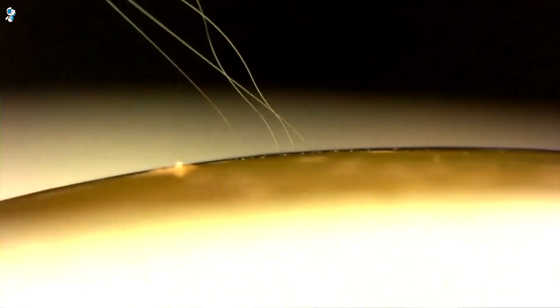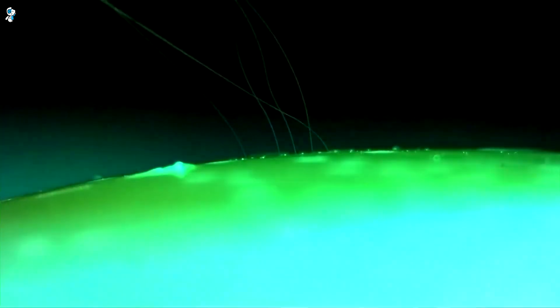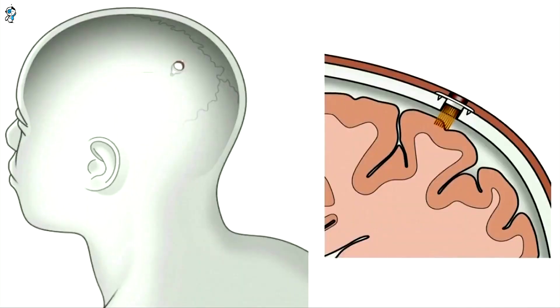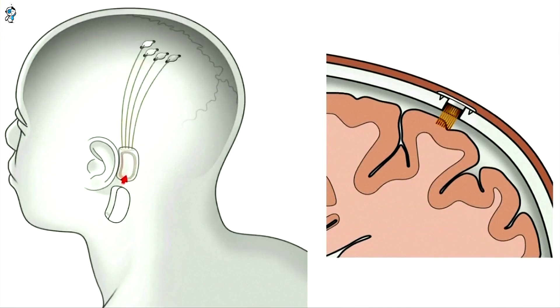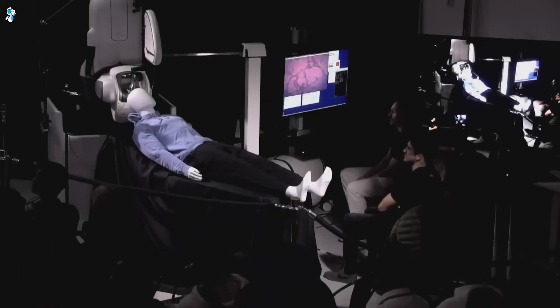To implant the N1, the R1 robot will first drill a small hole in the patient's skull. It will then insert a needle into the brain's motor cortex, the region that controls the intention of movement. With its robotic arm, the R1 will carefully stitch the N1's flexible polymer threads into the outer layers of the cortex.